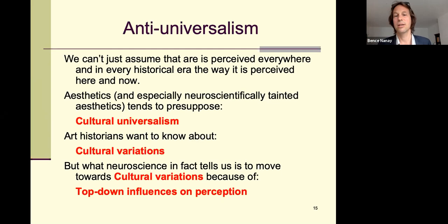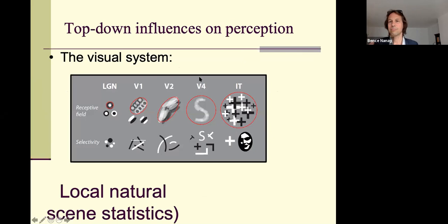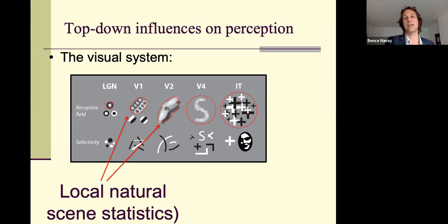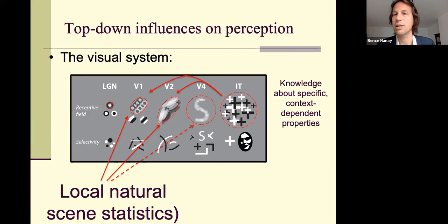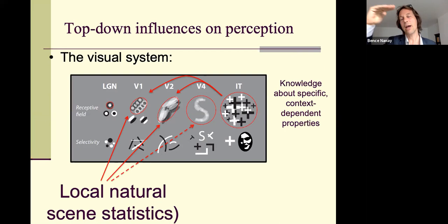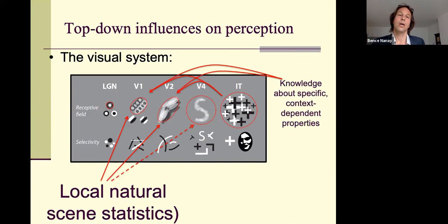Very briefly: the visual system works such that light hits the retina, input goes to the LGN, then primary visual cortex, secondary visual cortex, V4, and so on. But it's not just this feedforward, bottom-up mechanism — there are also top-down feedback mechanisms going from higher levels of perceptual processing back to lower levels. That has important implications.